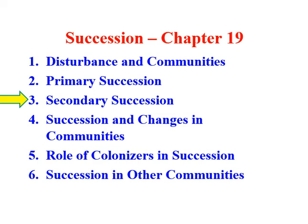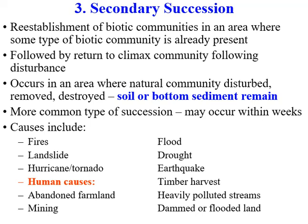Primary succession happens when there's a brand new habitat with nothing living there. Now we're talking about secondary succession, which is quite common and falls within the idea of disturbance in terms of equilibrium and non-equilibrium models. Secondary succession is a different situation — the community doesn't start from bare rock but is disturbed. Sometimes the community is destroyed. What causes that? Fires, landslides, and humans are responsible for a lot of things that disturb communities.